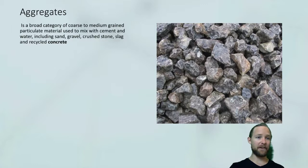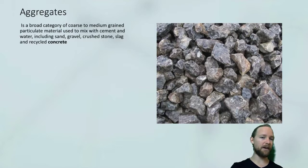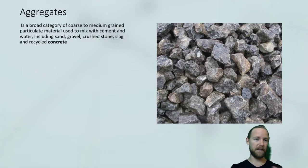Next we're looking at aggregates, which is a broad category of coarse and medium grain particle material. This mixes with cement and water, and includes sand, gravel, crushed stone, slag, and recycled concrete. It comes down to fine aggregate, which is the finer particles, and coarse aggregate — like in this photo — which is the bigger particles that blend with the cement and water.